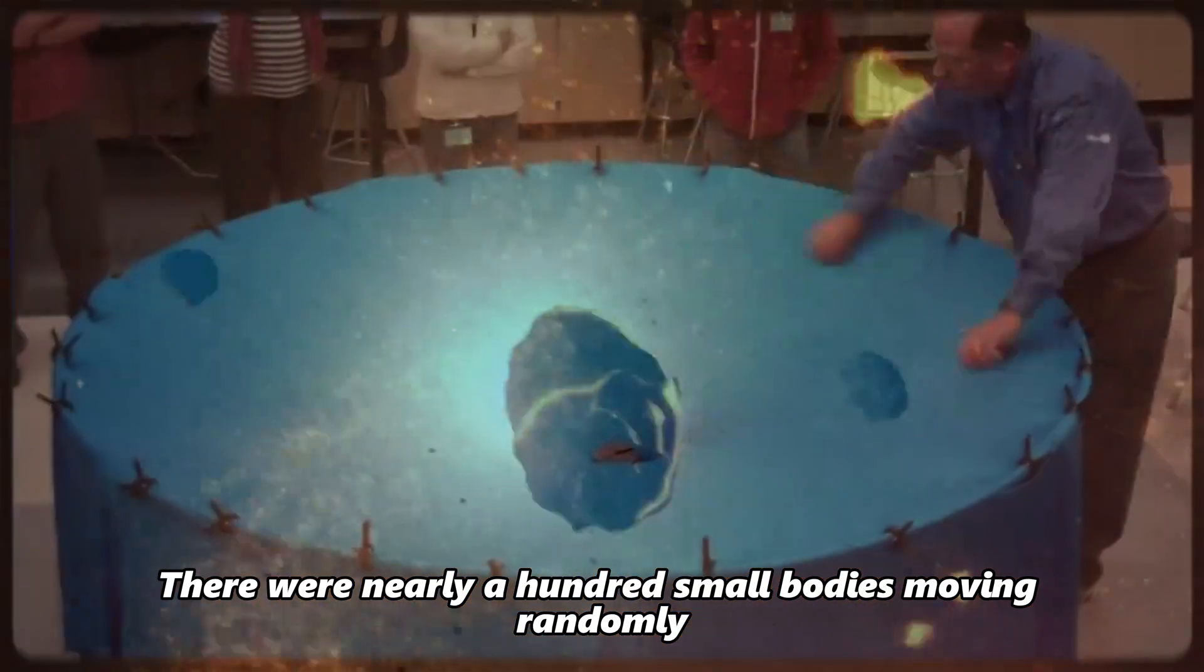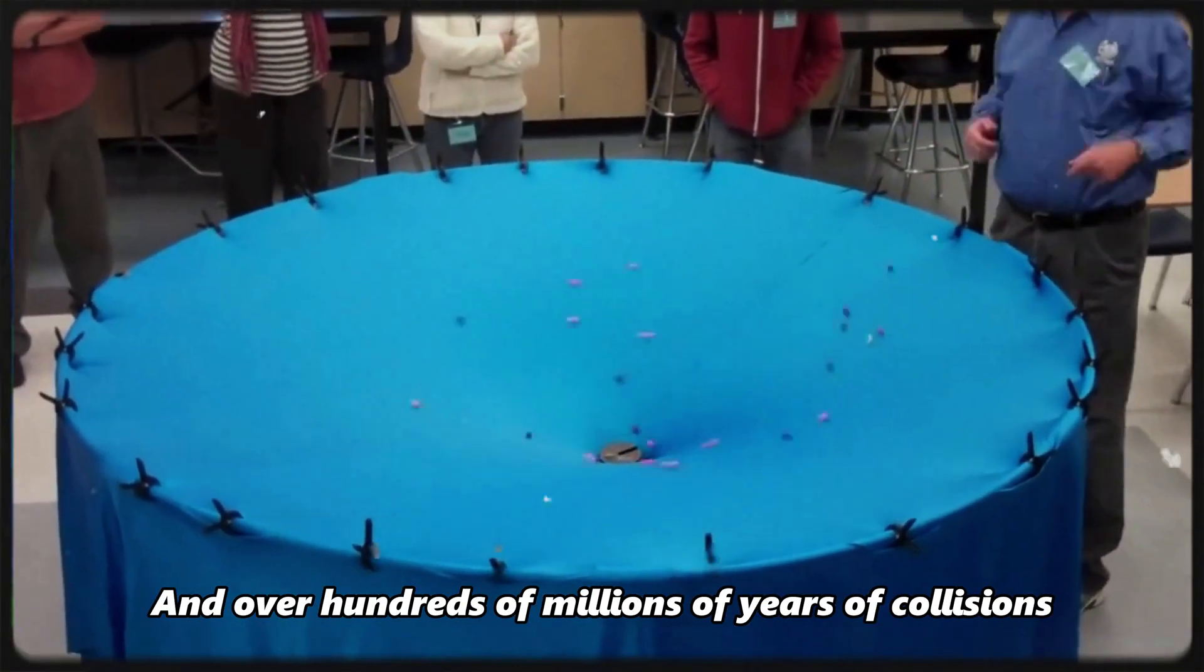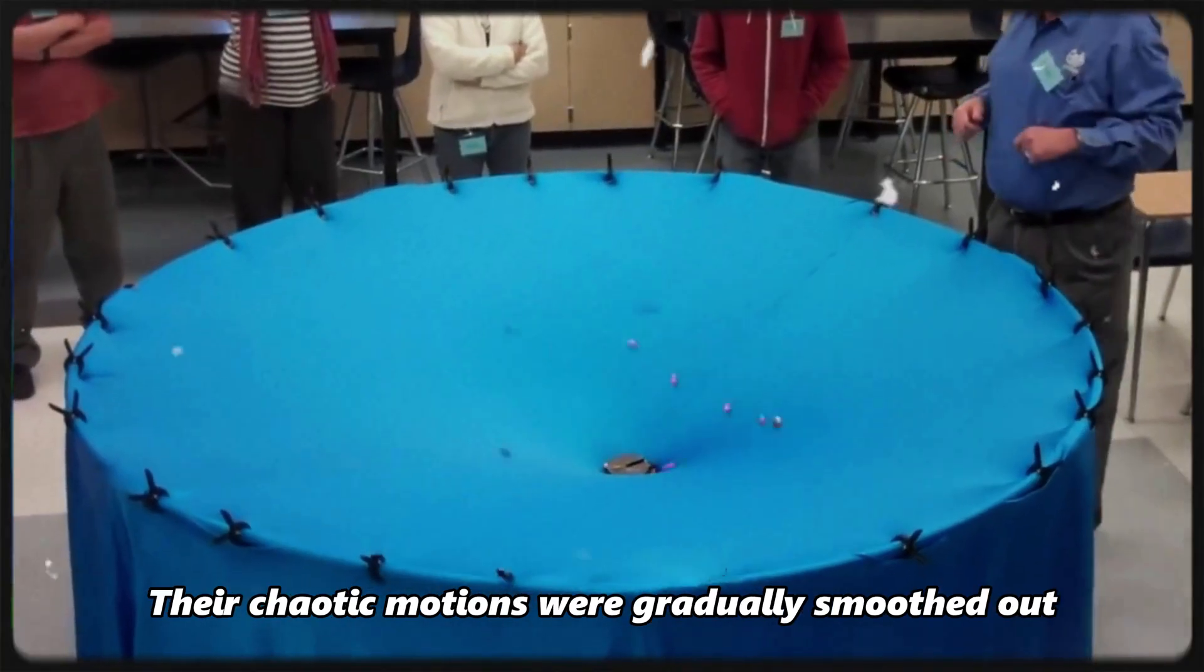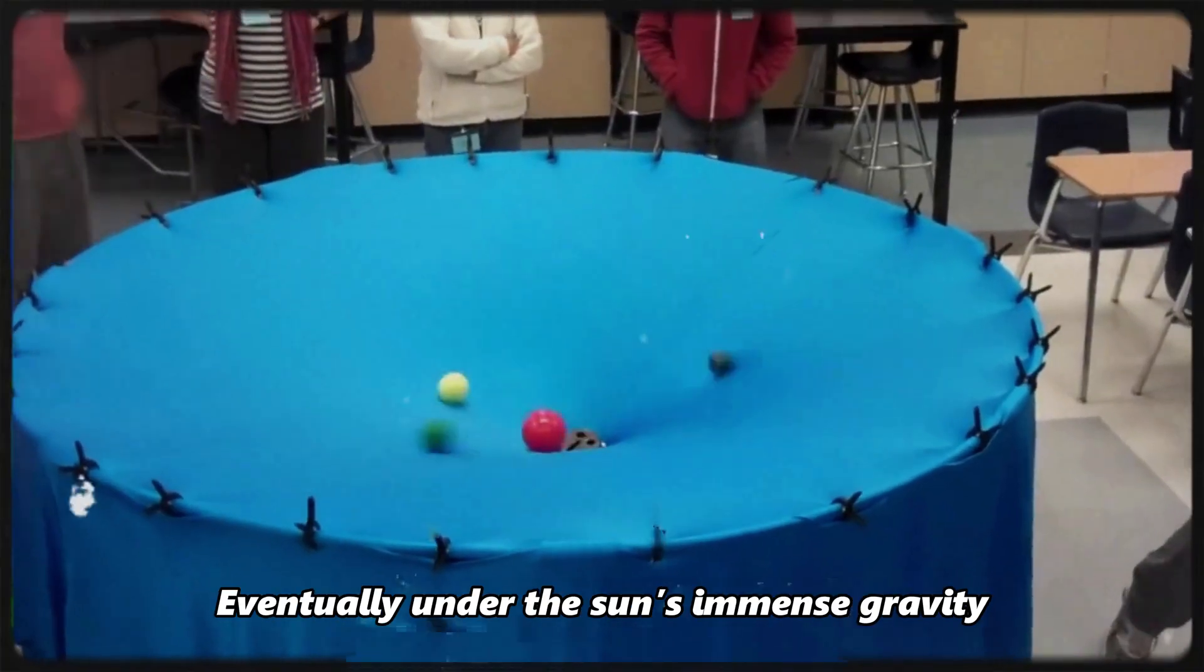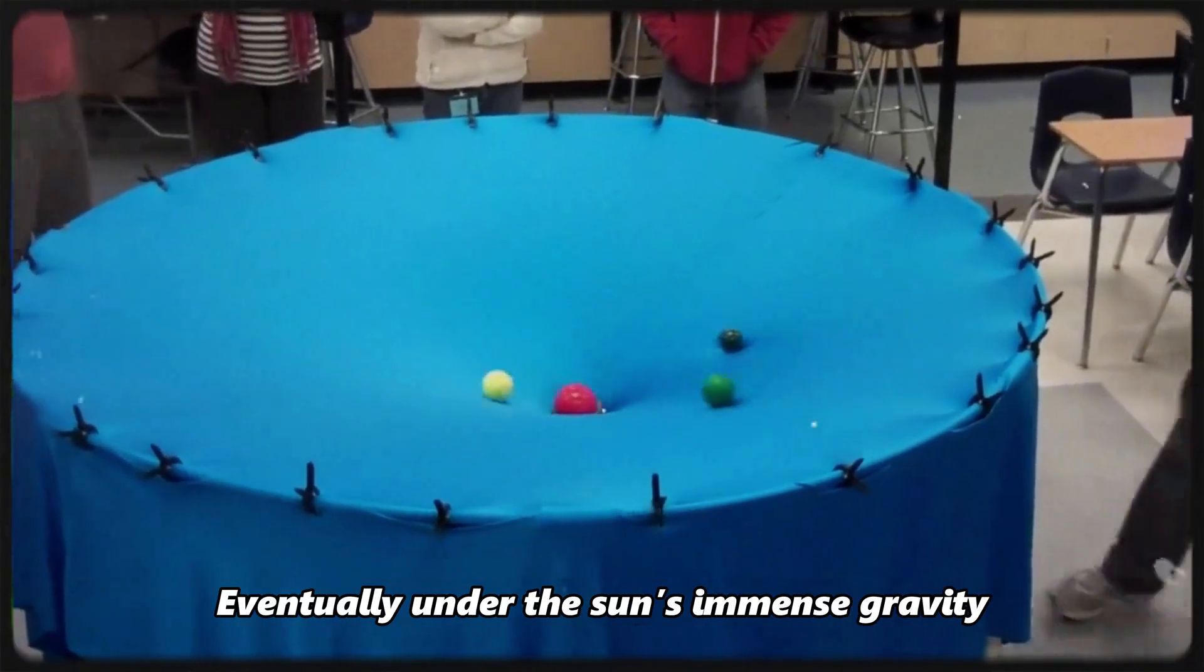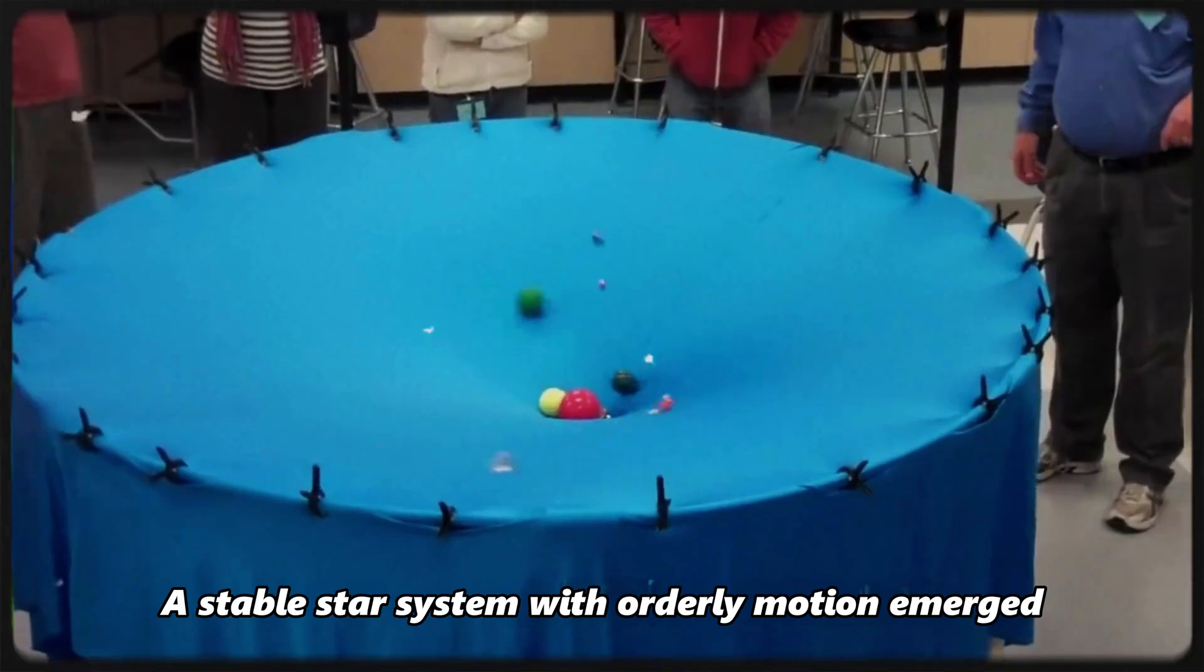There were nearly a hundred small bodies moving randomly, and over hundreds of millions of years of collisions, their chaotic motions were gradually smoothed out and they slowly merged into larger planets. Eventually under the sun's immense gravity, a stable star system with orderly motion emerged, and everything ended up orbiting counterclockwise.